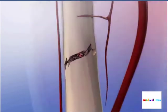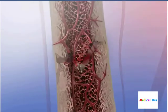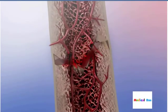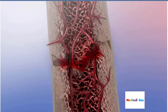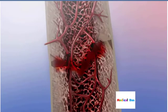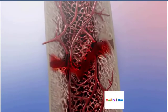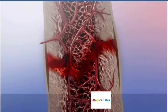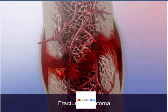A fractured bone bleeds. Bone repair begins as, over a period of hours, blood at the fracture site clots and forms a hematoma.